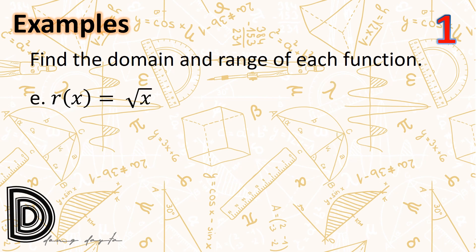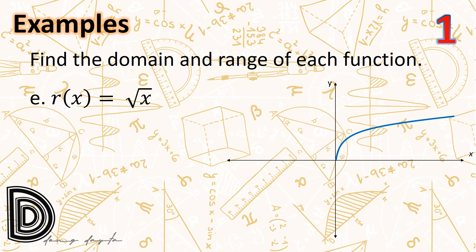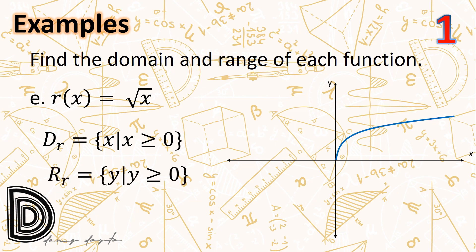Next, r(x) = √x. Consider the graph of this radical function. All points are in the first quadrant, so the domain cannot include negative numbers. The domain of r is the set of all x such that x ≥ 0, and the range of r is the set of all y such that y ≥ 0.